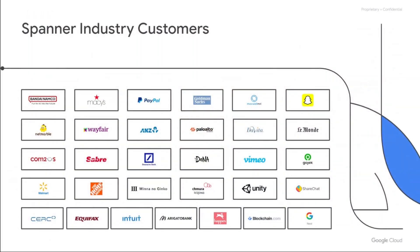This is just a snapshot of customers — there are so many of them we can't talk about each one. In gaming, we have Bandai Namco and Com2Us. In retail, we have Macy's and Home Depot. In financial services, we have PayPal, Goldman Sachs, ANZ Bank, and Deutsche Bank — some very major banks choosing Spanner for their next-generation architecture. In healthcare, we have DaVita building an EMR system on Spanner. In technology, we have ShareChat, Snapchat, and Vinyo. So a lot of customers are trusting their workloads with Spanner.